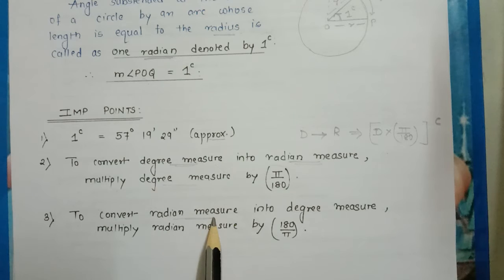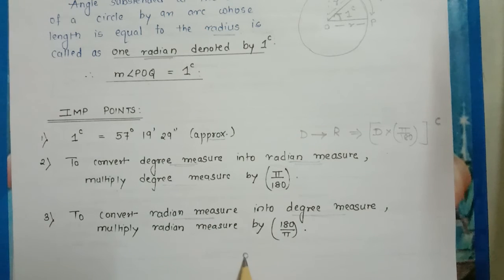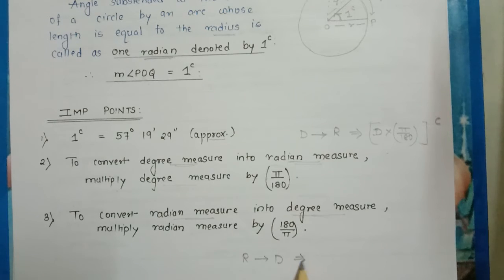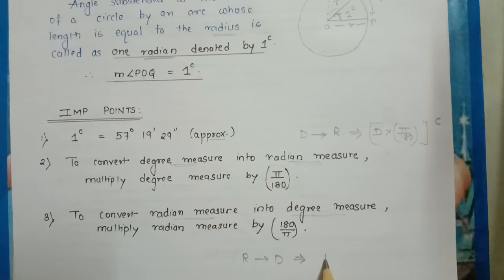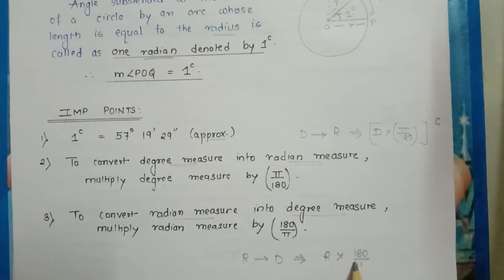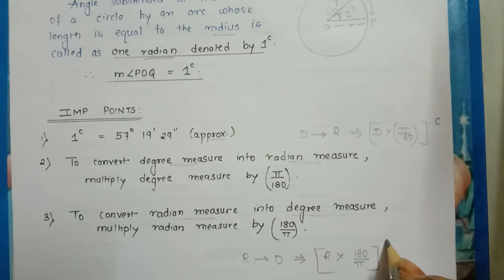Similarly, to convert radian into degree, multiply the radian measurement by 180 by pi, and that will convert it to your degree measure.